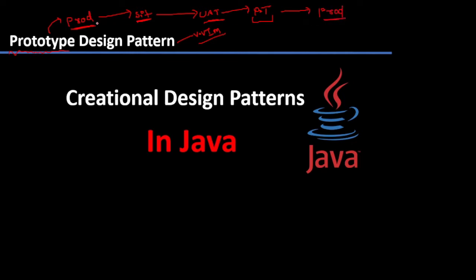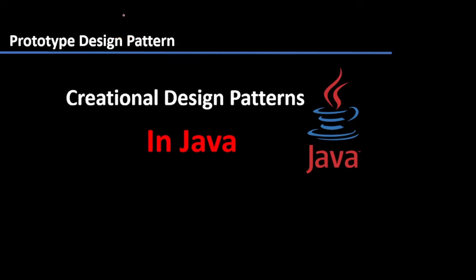So your code is a prototype. It may be possible that there is something flagged in performance testing — your code is not performing well according to the performance testing team or the SIT team. What will you do? You come back to the dev branch, make some changes, push it again. This is called a prototype.